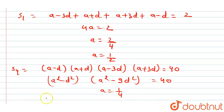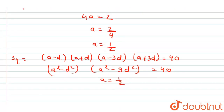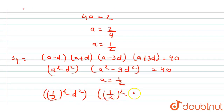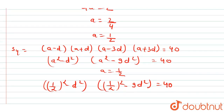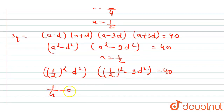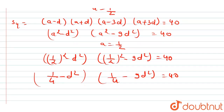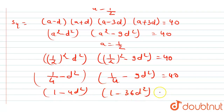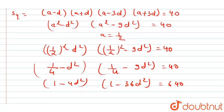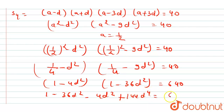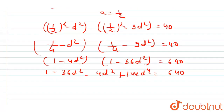Substituting a = 1/2, we get (1/4 - d²)(1/4 - 9d²) = 40, which becomes (1 - 4d²)(1 - 36d²) = 640. Expanding: 1 - 36d² - 4d² + 144d⁴ = 640, giving 144d⁴ - 40d² - 639 = 0.